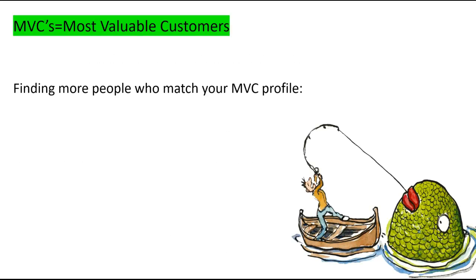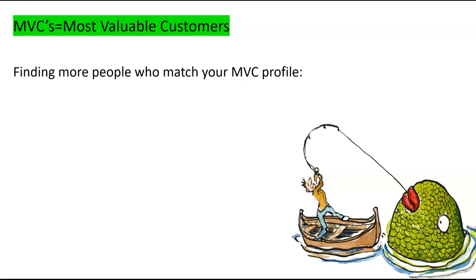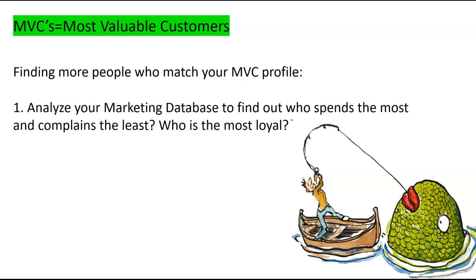Just a quick note: if you have an existing business and you know who your customers are, you have a database. There's something called the Most Valuable Customer — a very important concept in database marketing. The acronym is MVC. These are the people in your database who are the most loyal, who spend the most, who complain the least — they're the most profitable customers. What demographic or psychographic characteristics do these people have in common? Once you know who those people are, that's the kind of person you want for new customers. You're going after the big fish.